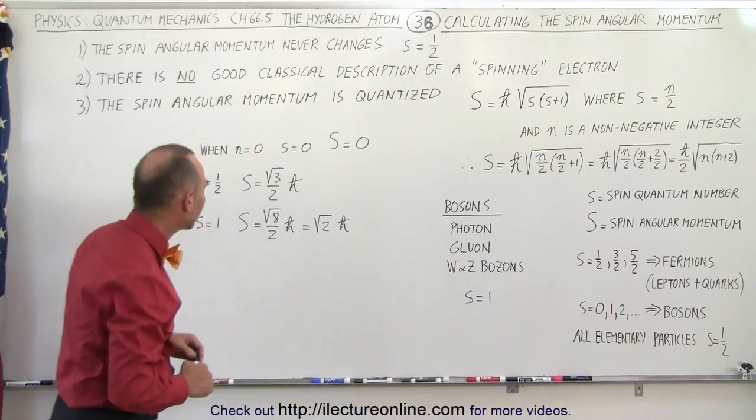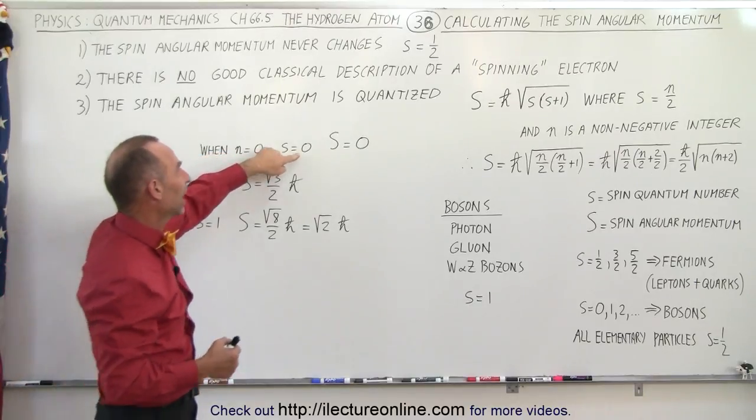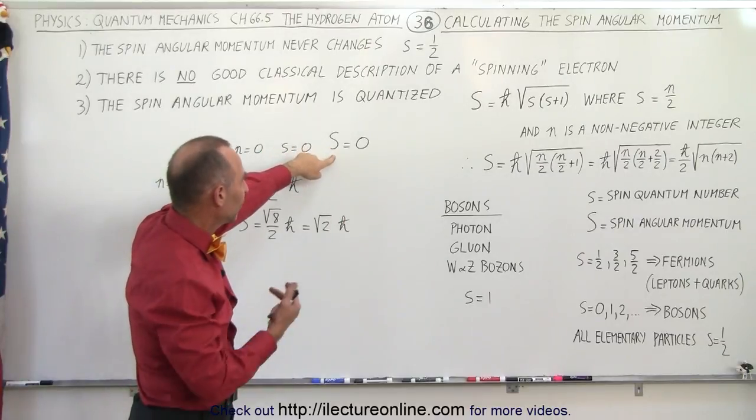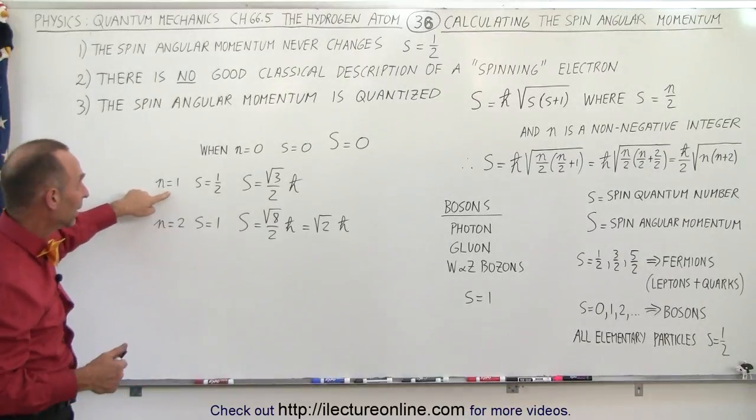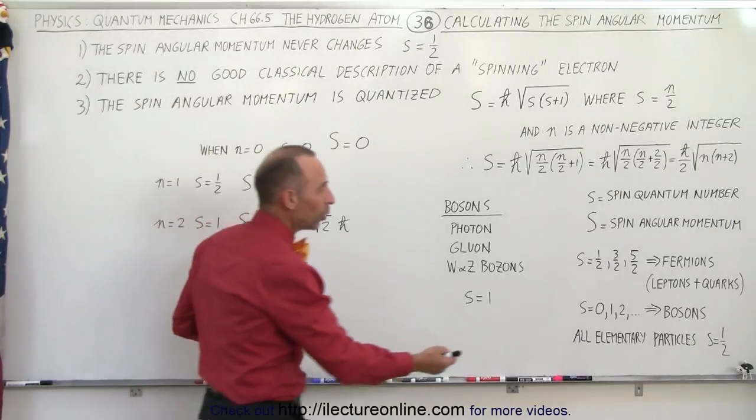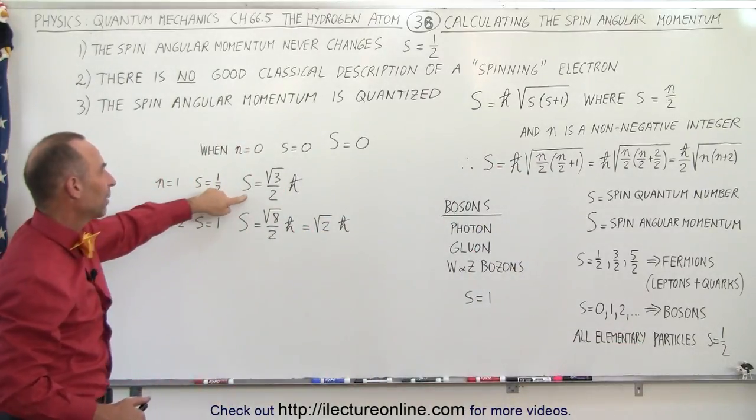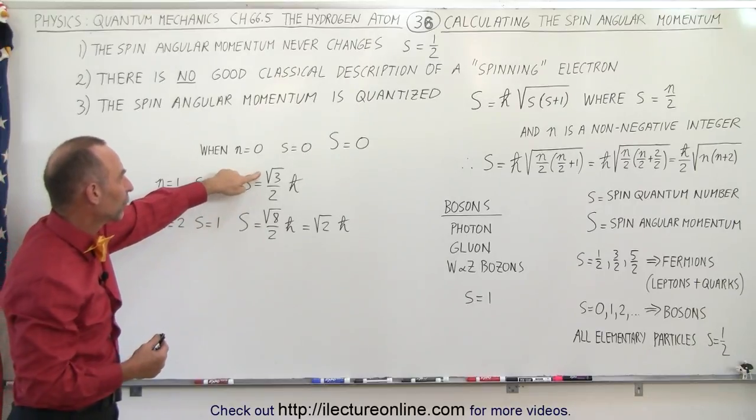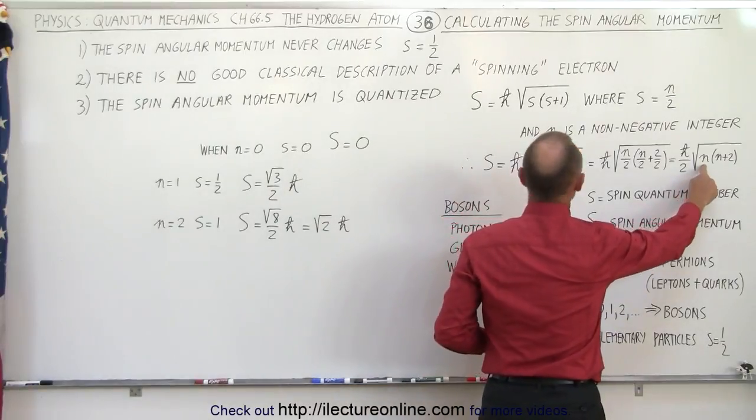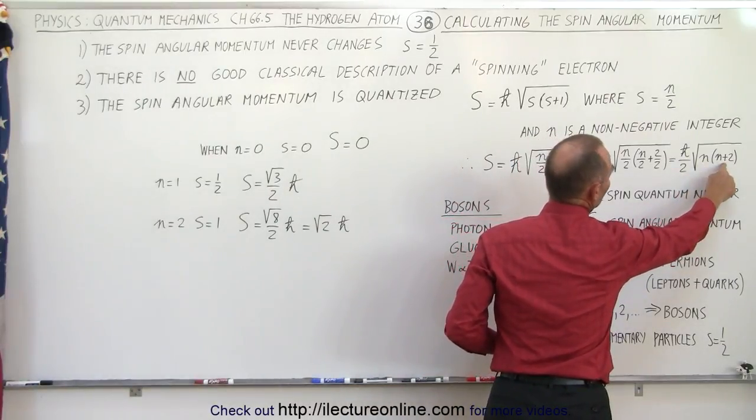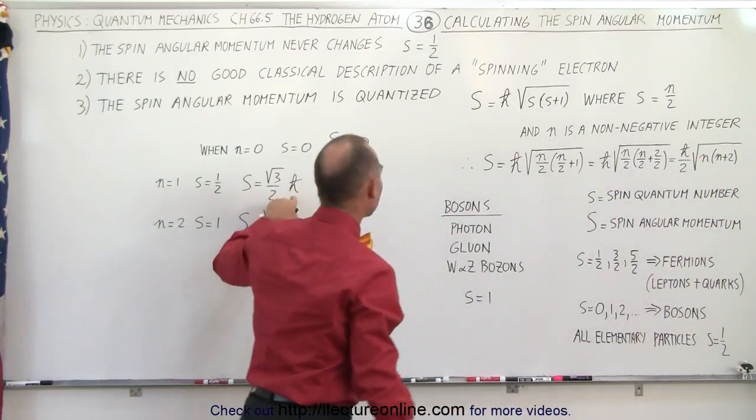Now let's go ahead and assume that if n equals 0, that integer number, then of course s equals 0, the spin quantum number, and S, the spin angular momentum, is 0 as well. But if we let n equals 1, then s equals 1 half, so therefore now we're talking about all elementary particles, including electrons, they have spin quantum number 1 half, that means they have spin angular momentum of the square root of 3 over 2 times h-bar. That comes, of course, if I'm plugging that in here, if n is equal to 1, 1 times 3 is 3, so we have the square root of 3 over 2, which is what we have over here, times h-bar.